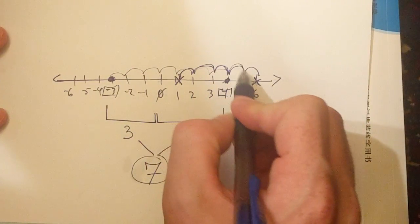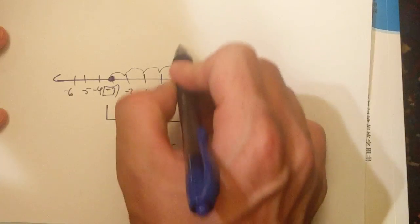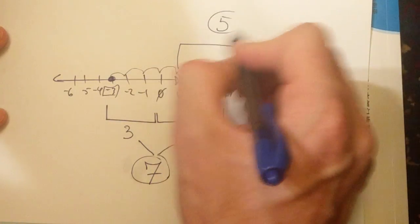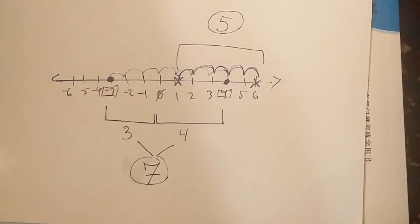That was one, two, three, four, five. It had a total distance of five. So the difference between one and six is, of course, five.